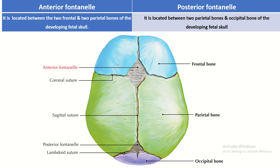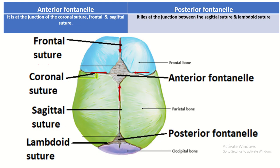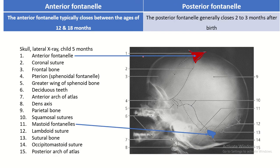The anterior fontanelle is situated between the two frontal bones and two parietal bones. The posterior fontanelle is situated between the two parietal bones and one occipital bone. The anterior fontanelle lies at the junction of the frontal suture, coronal suture, and sagittal suture. The posterior fontanelle lies at the junction of the sagittal suture and lambdoid suture.